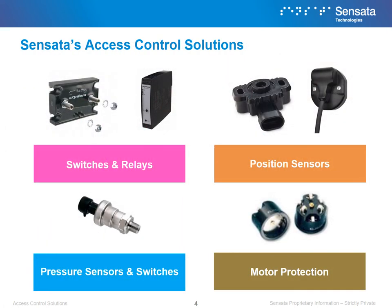Space, environment abuse, and maintenance are three of the biggest concerns when it comes to new designs for access control applications. New designs require smaller components so that the application itself can fit into tighter areas. Resistance to the elements as well as vibration is of great importance. As access control applications become more prevalent, their components need to withstand the environments they live in. Finally, components that reduce maintenance play a large role as well. Due to their remoteness, access control applications need to have long cycle lives and their components need to work together to preserve the lifetime of critical aspects like the motor.